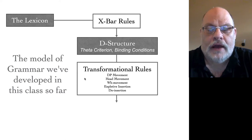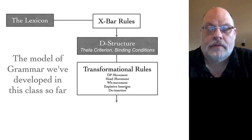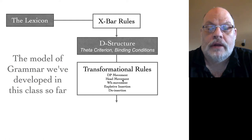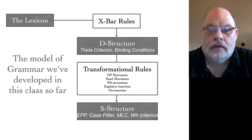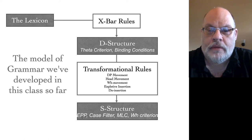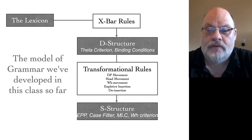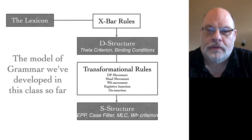We have proposed five transformations so far: the transformation of expletive insertion, do insertion, do support, and then we have the three movement rules — head movement, DP movement, and WH movement. These rules change the D-structure in ways that will meet constraints that hold at the S-structure, or surface structure. That includes constraints like the EPP — every specifier of TP must be filled — the case filter, every DP must have case, the minimal link conditions so when you create movement chains you're only doing little hops, the WH criterion that WH words must be in the specifier of CP, etc.